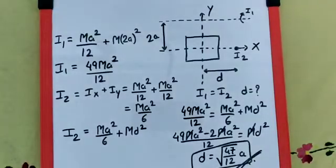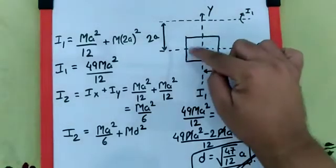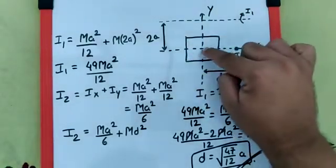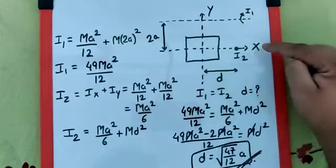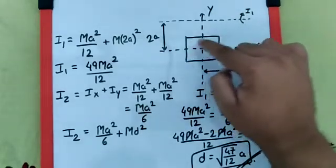The next question says a thin uniform square lamina of side A is placed in the XY plane with its side parallel to X and Y axis and its center coinciding with the origin. That square you can see over here. The center coincides with the origin of X and Y axis and the side of this is given as A.